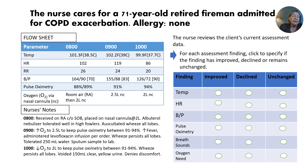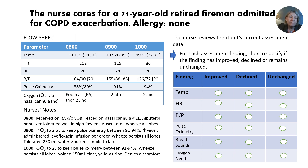At 1000, decreasing the oxygen to 2 liters to keep pulse oximetry between 91 to 94%. Wheeze persists in all lobes. Voided 150 mLs of clear yellow urine — urine is a reflection of renal function. The patient denies discomforts. They came in short of breath and are no longer complaining of being short of breath, which is progress.